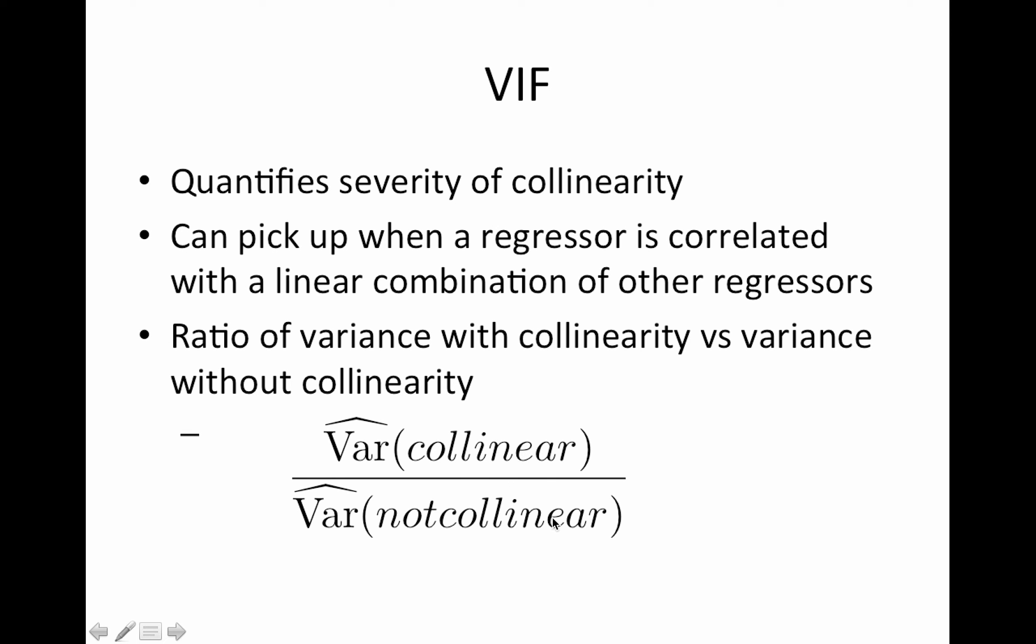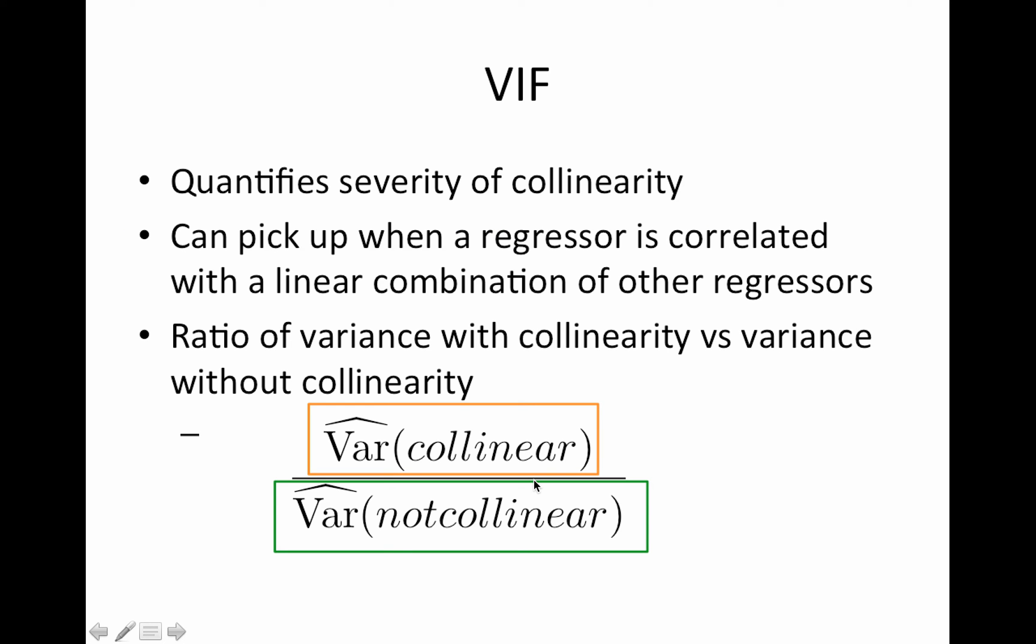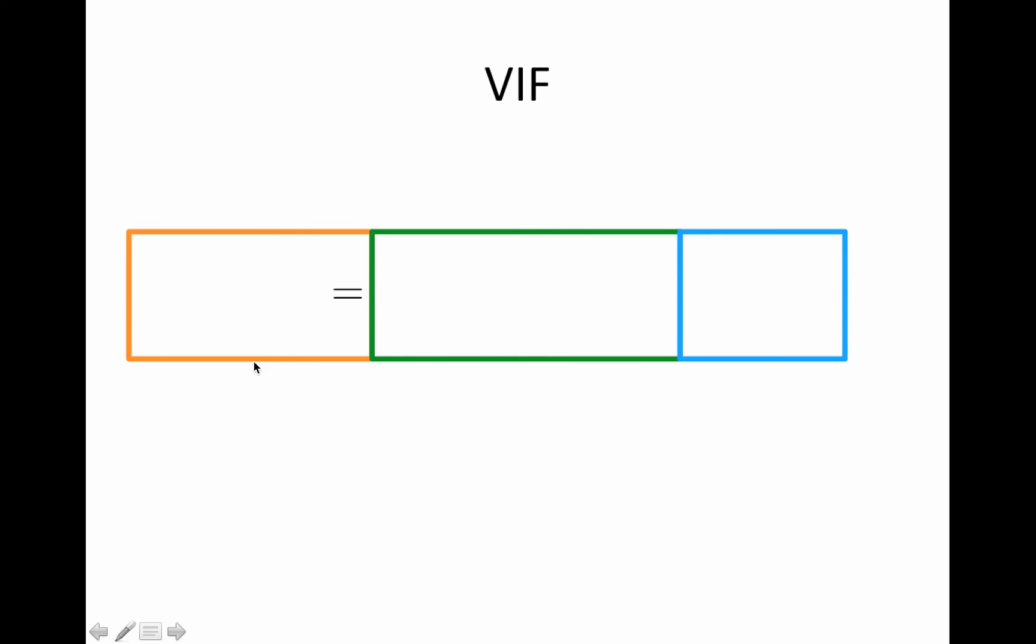Does that make sense? So it's the ratio of these two things. Now I'm going to put these little boxes around here because I'm about to show you an equation and I don't want you to get overwhelmed. So our goal is to have this ratio and the equation I have is the orange box equals green box times some blue box. So you can see if I divide both sides of my equation by this green box, I'll have orange over green, right? Or the orange over green equals blue. So whatever is going in this blue box will be the VIF. Okay, hopefully that makes sense.